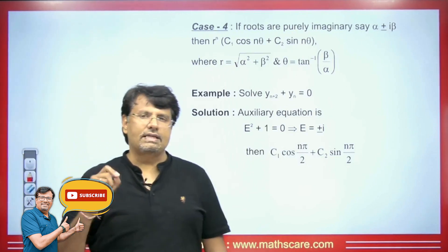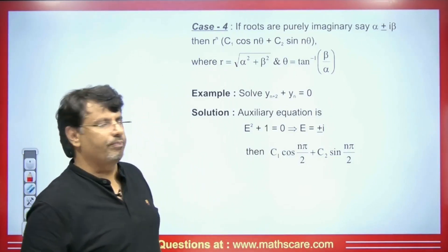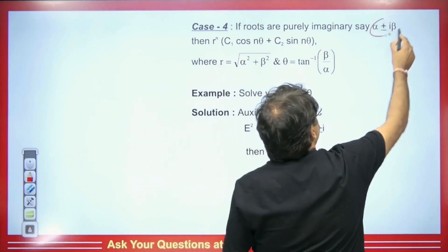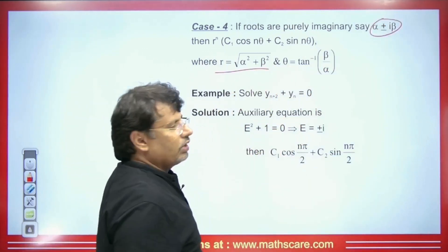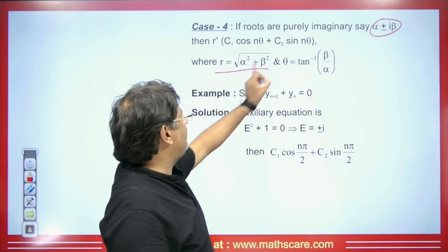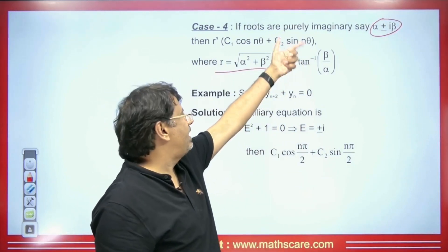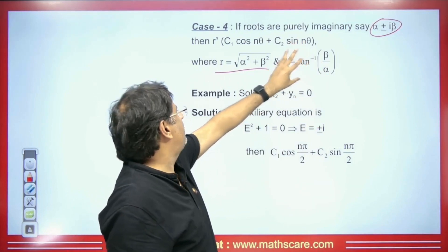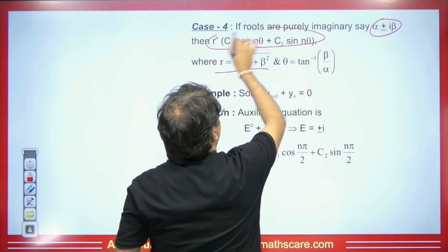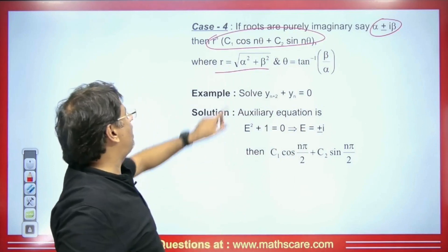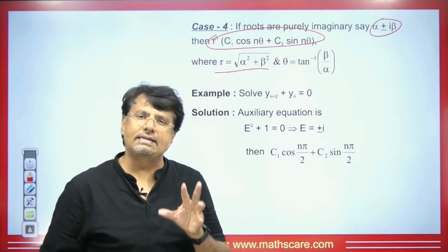Suppose if we have an imaginary root. If we have alpha ± iota·beta as the root, we need to find r = sqrt(alpha² + beta²). Then we find theta = tan⁻¹(beta / alpha). This value of theta and r is put into r^n · [C1·cos(n·theta) + C2·sin(n·theta)]. We take the value of r and put it here, and take the value of theta and put it here. This will be the CF.